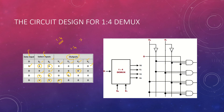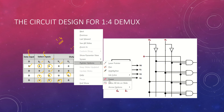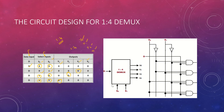So Y0, Y1, Y2, and Y3 are all enabled one after another based on the select line values. When select lines are 0 and 0, you get Y0; when S0 and S1 are 1 and 0, you get Y1; similarly Y2; and when both are 1, it is Y3. That's the demultiplexer operation done.